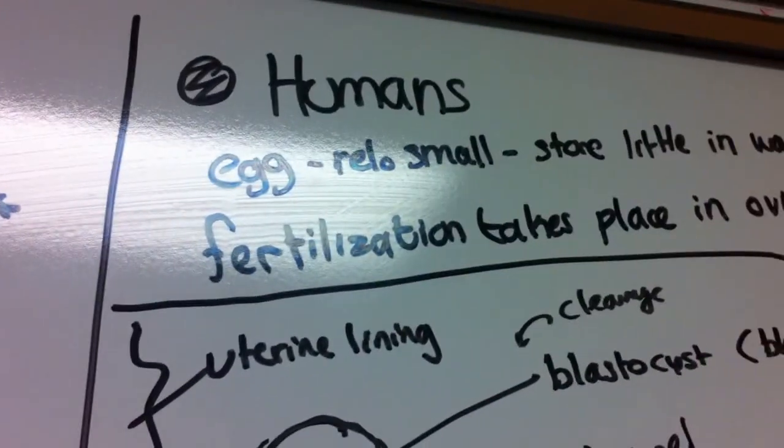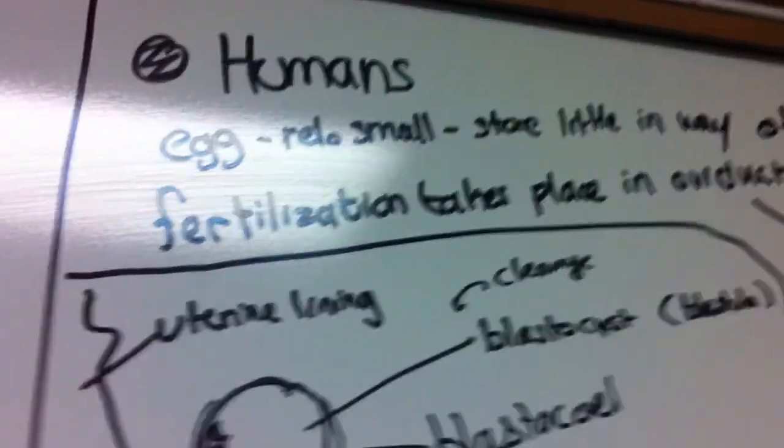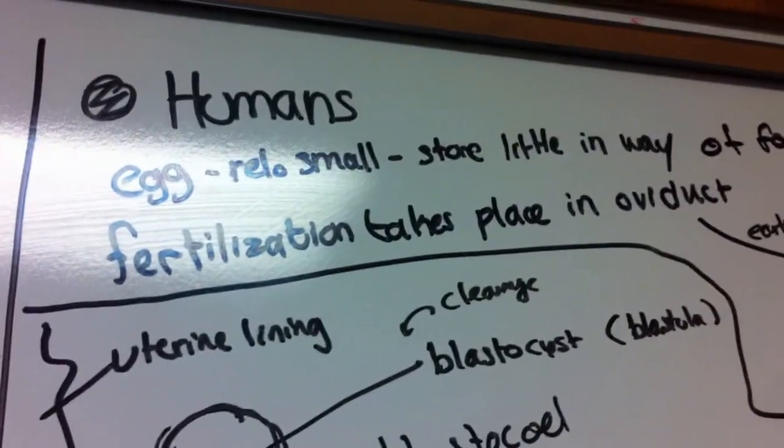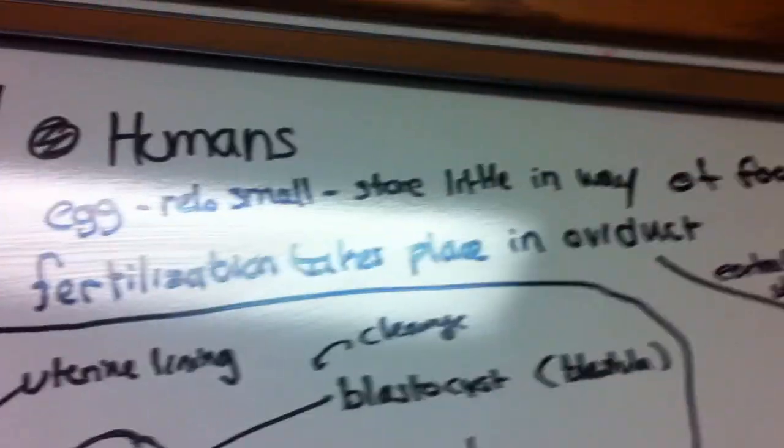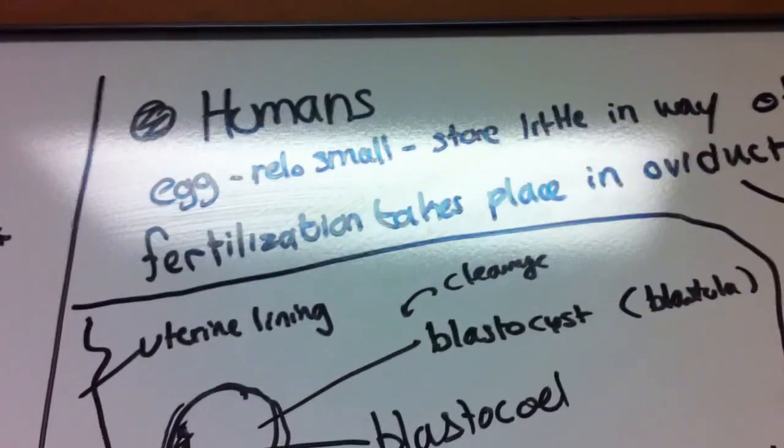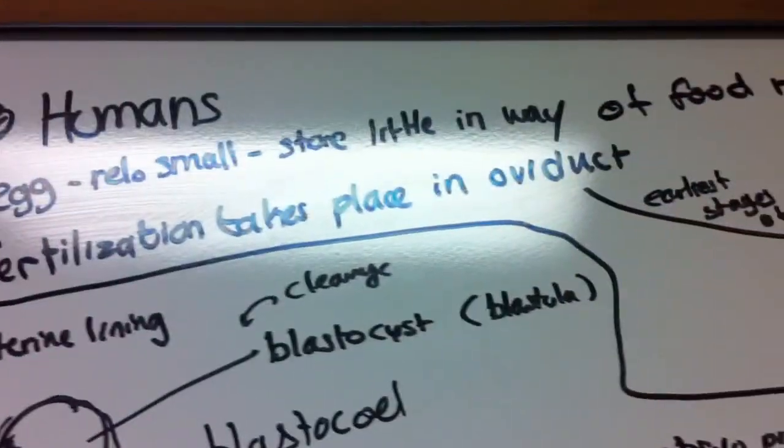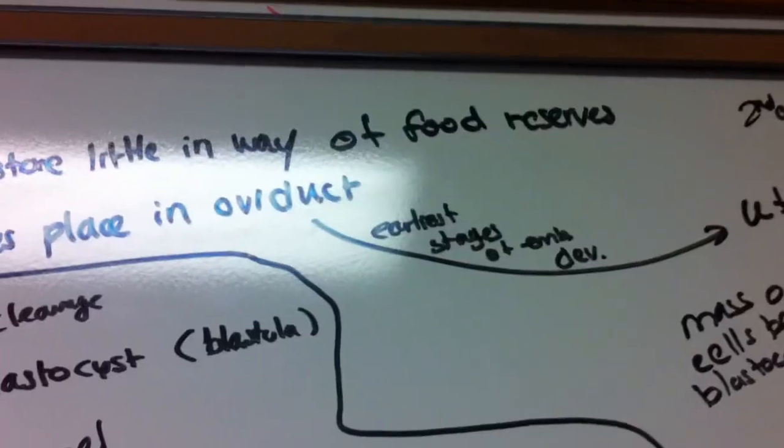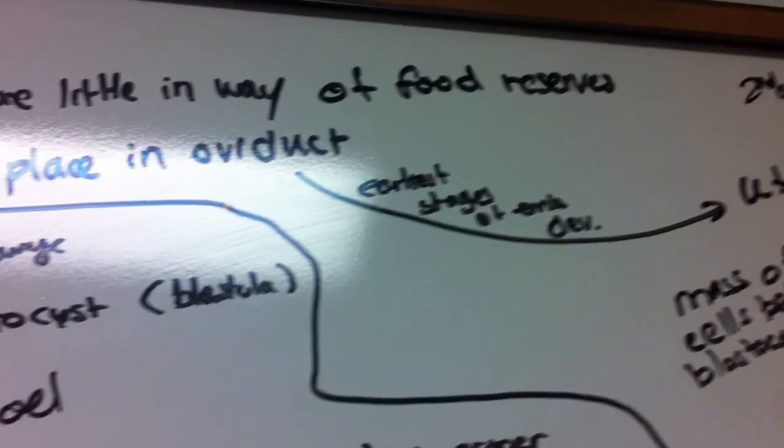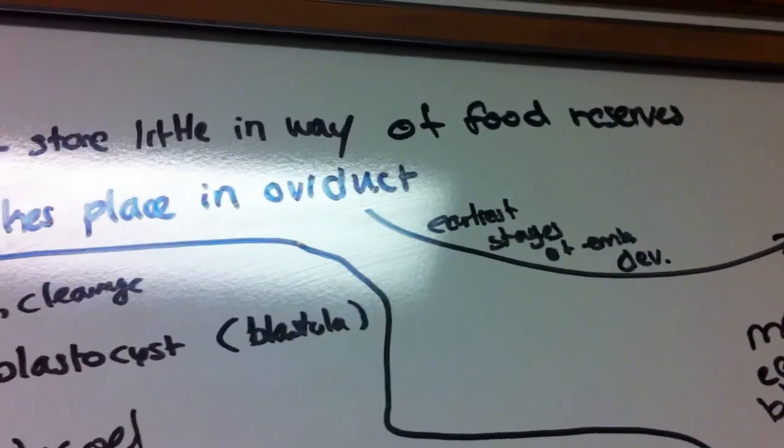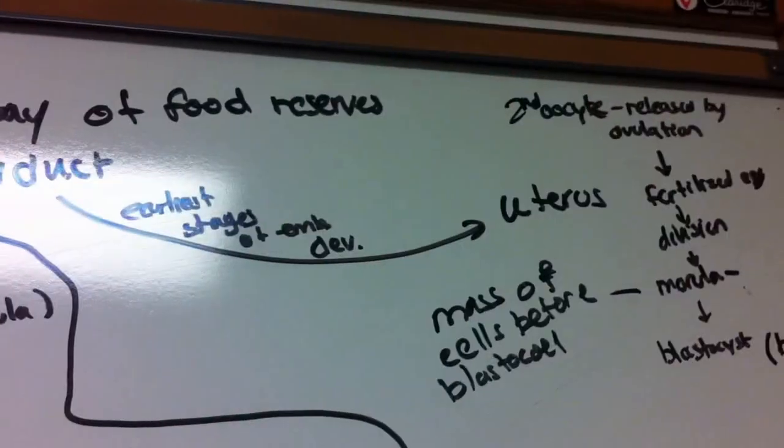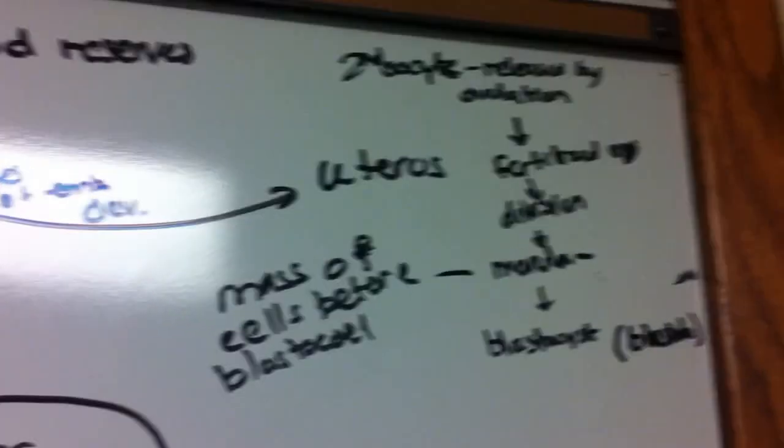For humans, we have a very special case. We should know that eggs are relatively small compared to other animals, and because they're so small, they store little in the way of food reserves. Fertilization takes place in the oviduct and the earliest stages of embryonic development will occur on the way from the oviduct to the uterus.